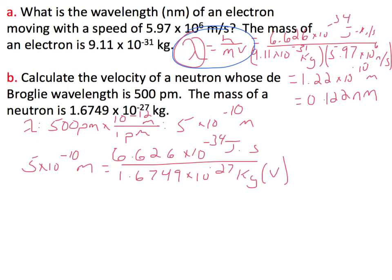So if we set this up and solve for velocity, we're basically just multiplying. We move this side to this side of the equation. We can multiply it by 5 times 10 to the minus 10th, and then we divide both sides in order to solve V, and so we get the velocity is going to be equal to 791 meters per second.